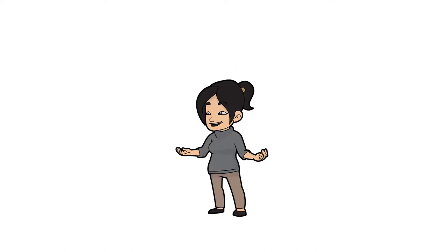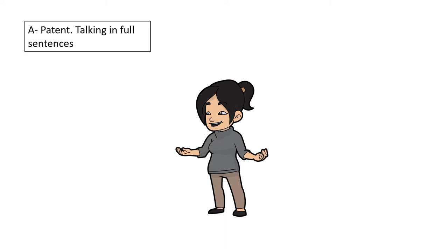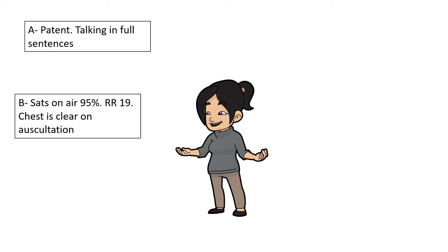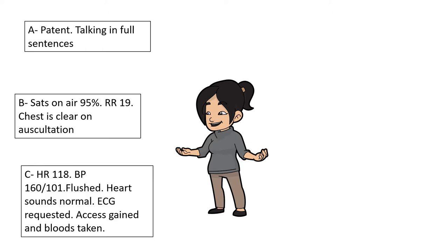Let's do our A-to-E assessment. Airway is patent — she's talking in full sentences. Breathing: sats are fine, respiratory rate is fine, chest is clear. Circulation: she's tachycardic and hypertensive, and you'll notice her skin is flushed. Heart sounds are normal on auscultation, but you'll want an ECG, IV access, and blood tests.